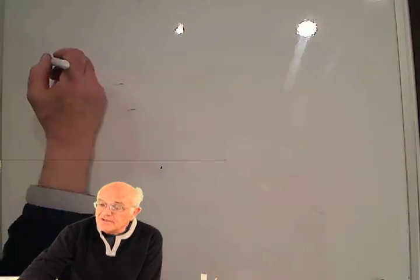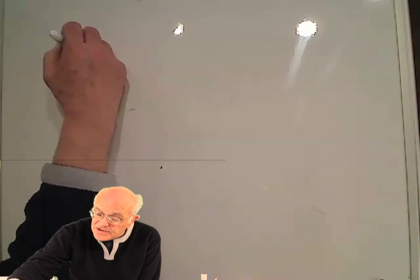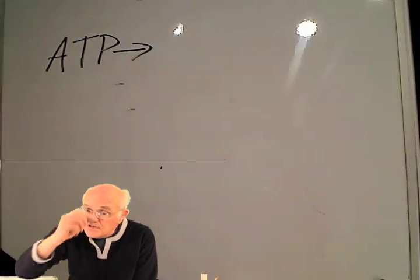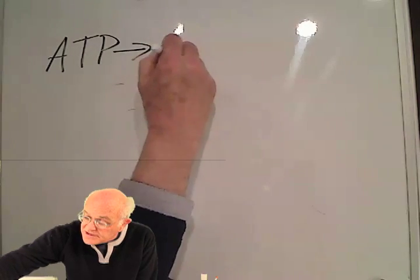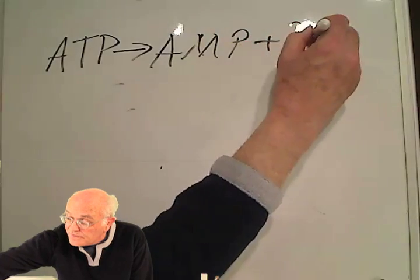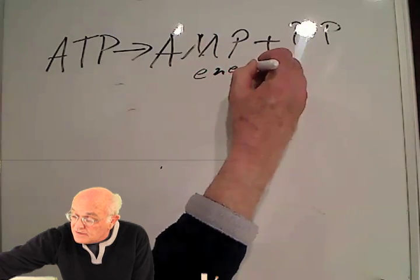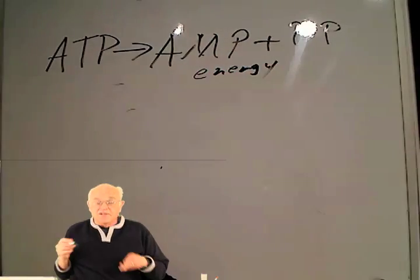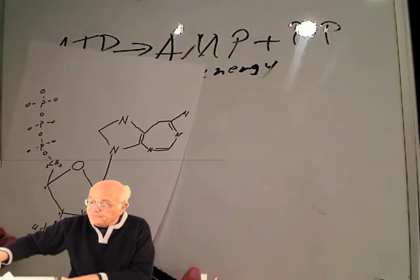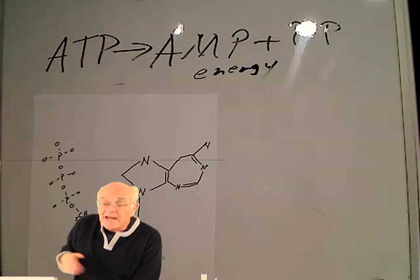We need to take a very quick look at the energy considerations here. The energy can be seen in this little reaction. Adenosine triphosphate, we've seen this before, goes to adenosine monophosphate plus two phosphate groups, and then the energy is released. The energy for DNA replication comes from this reaction.